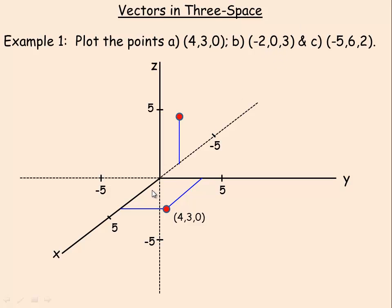Now the point (-2, 0, 3). The negative 2 is the x coordinate, so we would go 2 in the direction of the negative x axis. The zero y coordinate means you don't move in the y direction at all. You just go up 3 units — that's 3 units in the direction of the positive z axis. So that would be the point (-2, 0, 3). Since the y coordinate is zero, it lies on the xz plane, because x and z are non-zero but y has a value of zero.